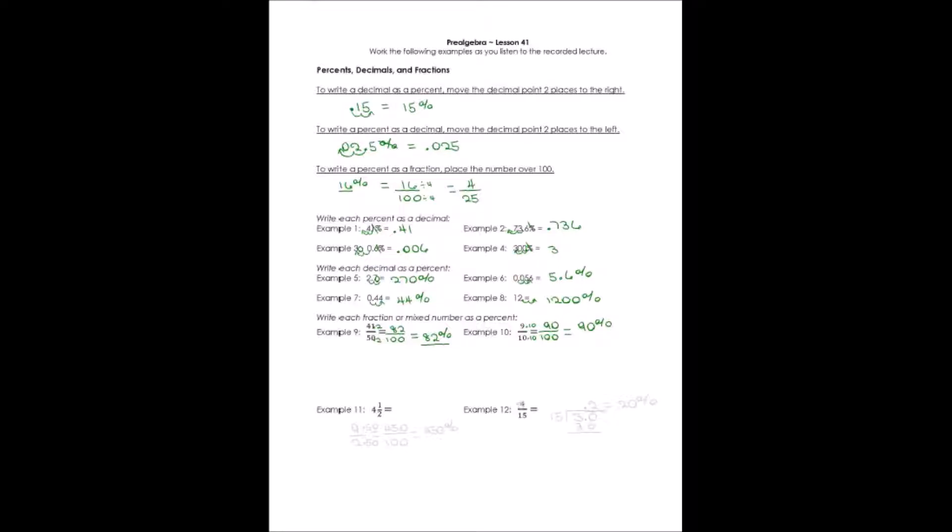Example number 11 says 4 and one-half. And I'm really going to change that. I'm going to change it to an improper fraction. I'm going to say 4 times 2 is 8 plus 1. That gives me 9 over the same denominator. Now, can I easily get this to become a fraction with a denominator of 100? Well, I can. If I multiply each of them by 50, I will have 450 over 100 or 450%.